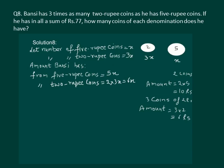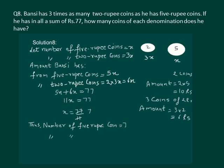In the question it is given that he has in all a sum of rupees 77. That means 5x plus 6x should be equal to 77. Solving further, we get 11x is equal to 77. Dividing both sides by 11, we get x is equal to 7. So the number of 5-rupee coins is 7 and the number of 2-rupee coins is 3 into 7, that is 21.